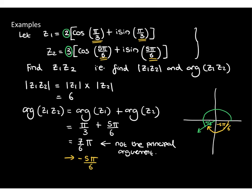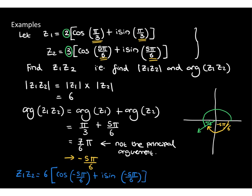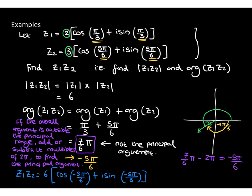So the argument is −5π/6, giving the product z1z2 = 6[cos(−5π/6) + i sin(−5π/6)]. A useful trick: if you end up with an angle outside the principal argument range, simply add or subtract 2π (or multiples of 2π) to bring it within range. So 7π/6 − 2π = −5π/6. Remember this rule for the next example.